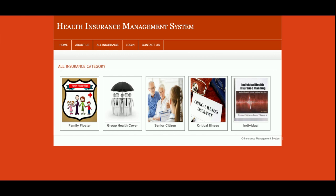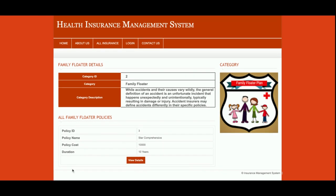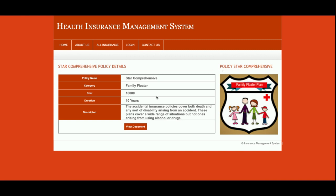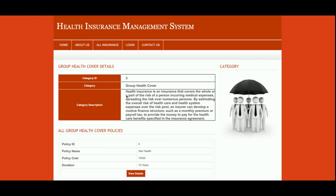These are the categories — all five categories are coming from the database. If you click on a category, you will be able to find the details of that category, and below the category you will get all of the policies which belong to it. For example, if 'Family Floater' is a category, all policies under it will be displayed. Once you click 'View Details' you will see the policy details, and clicking 'View Document' shows the documents. You can also download documents uploaded by the admin.